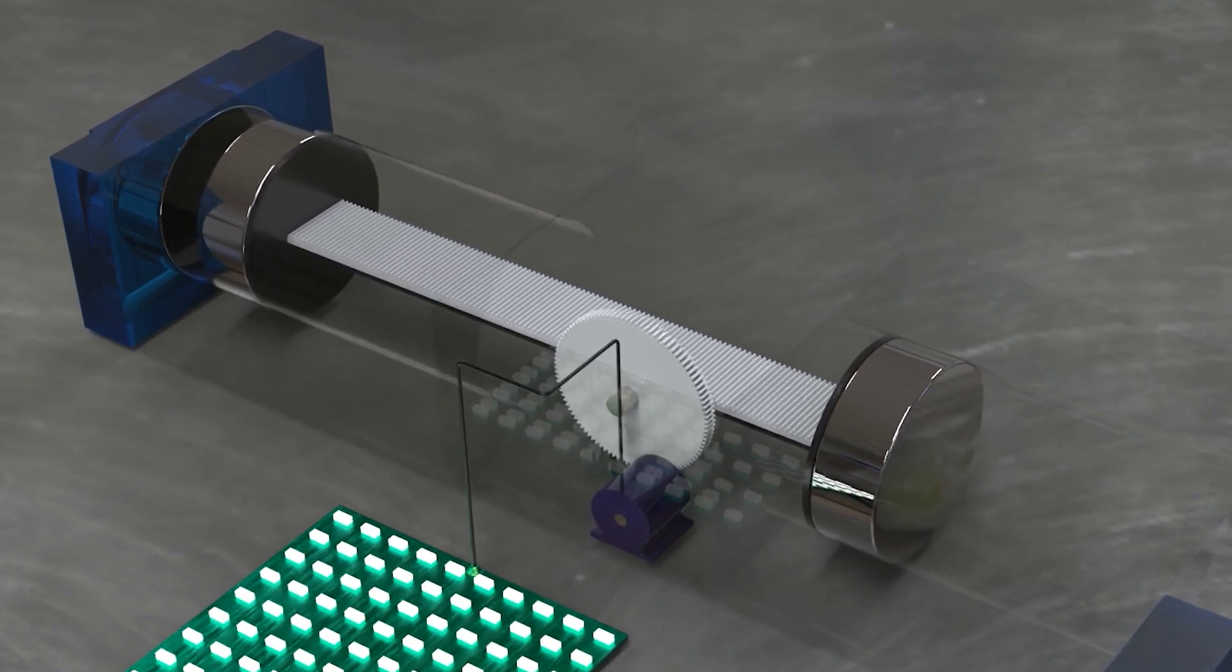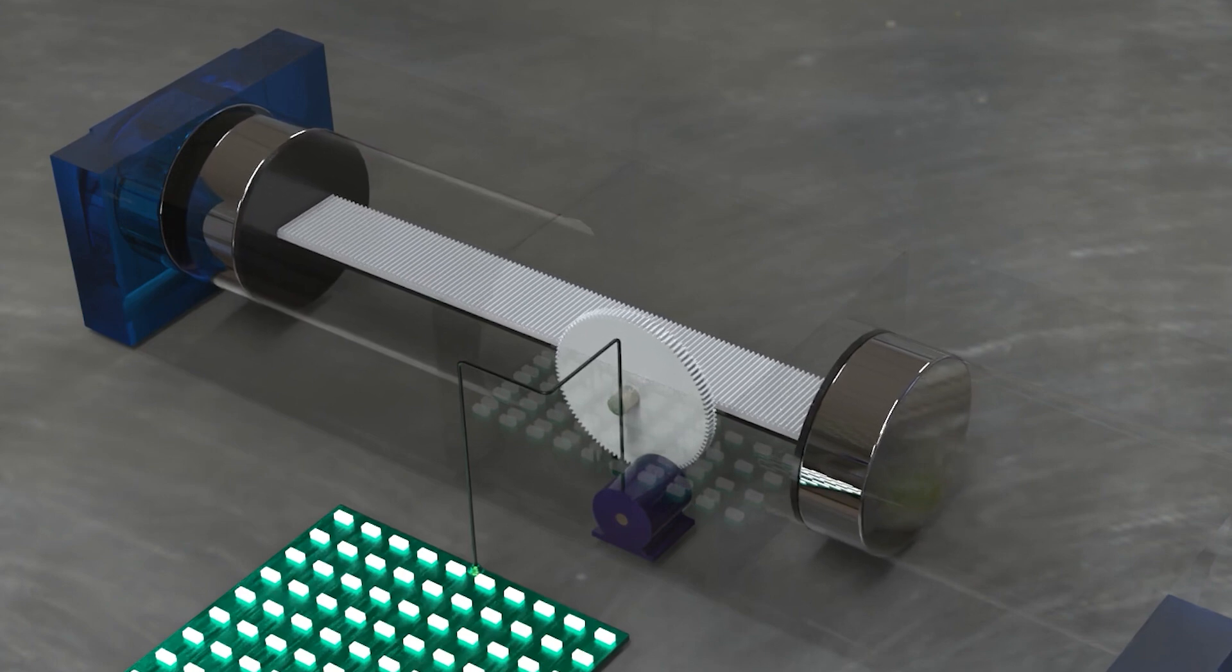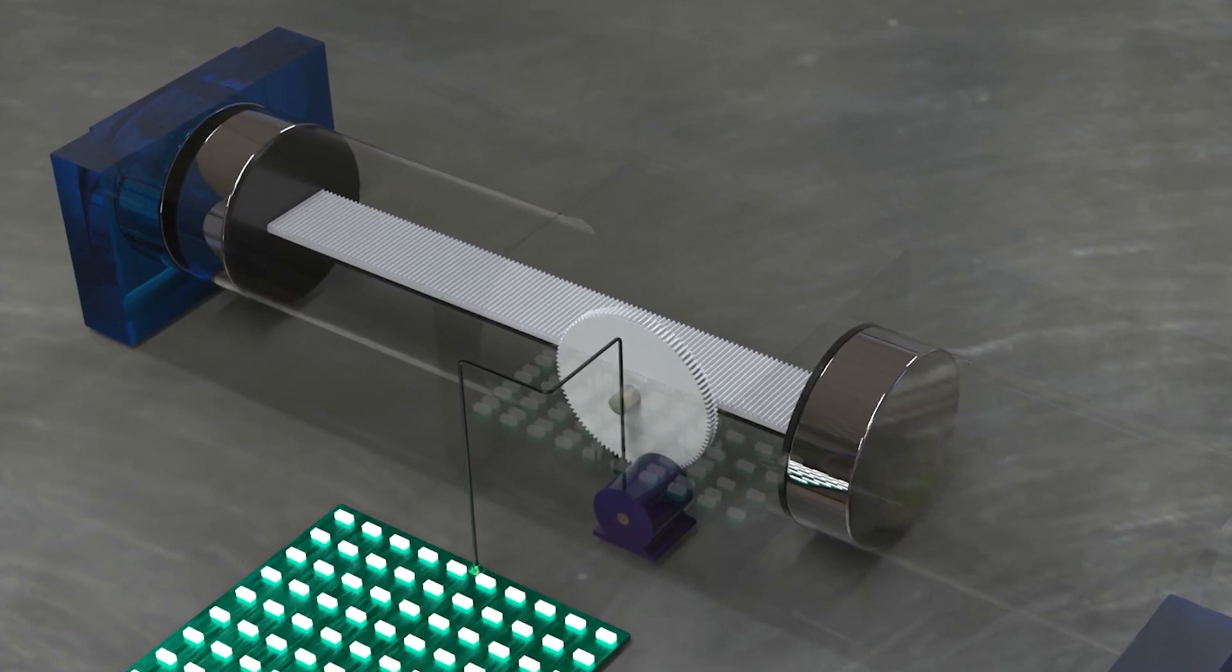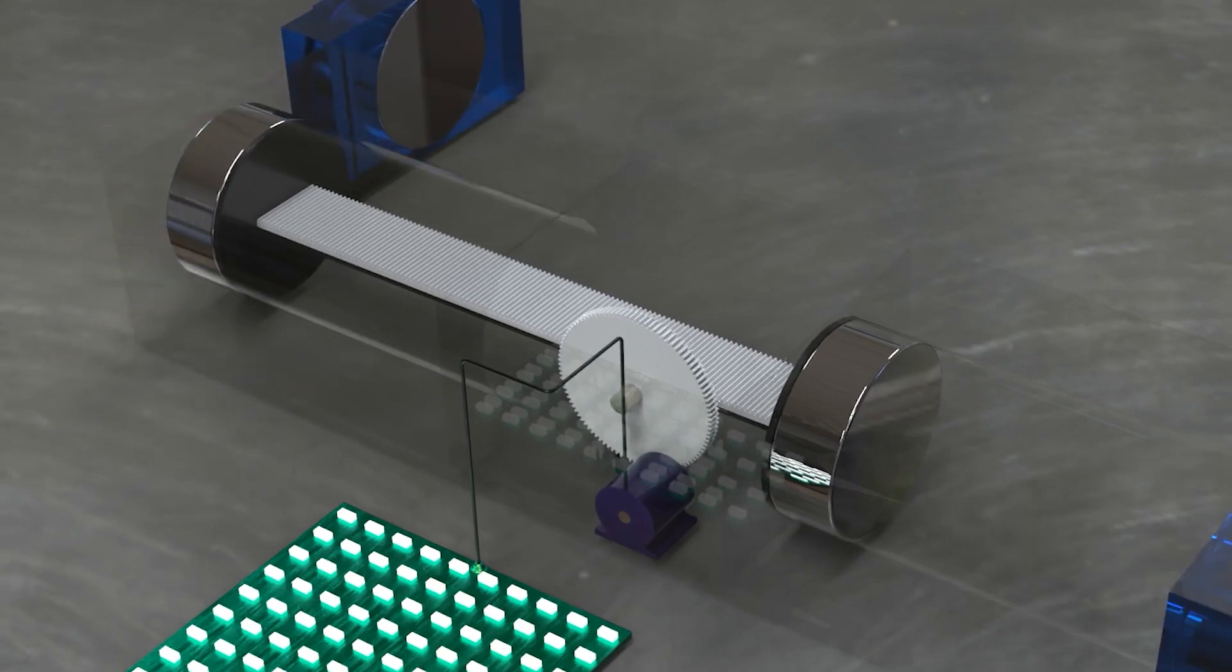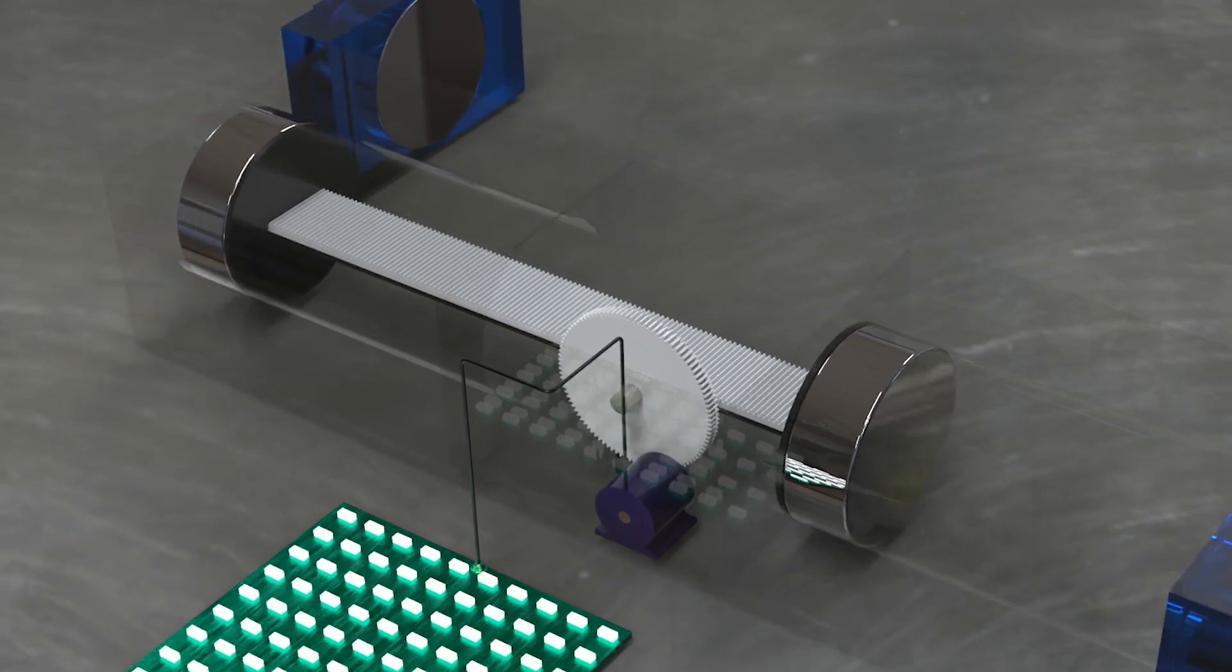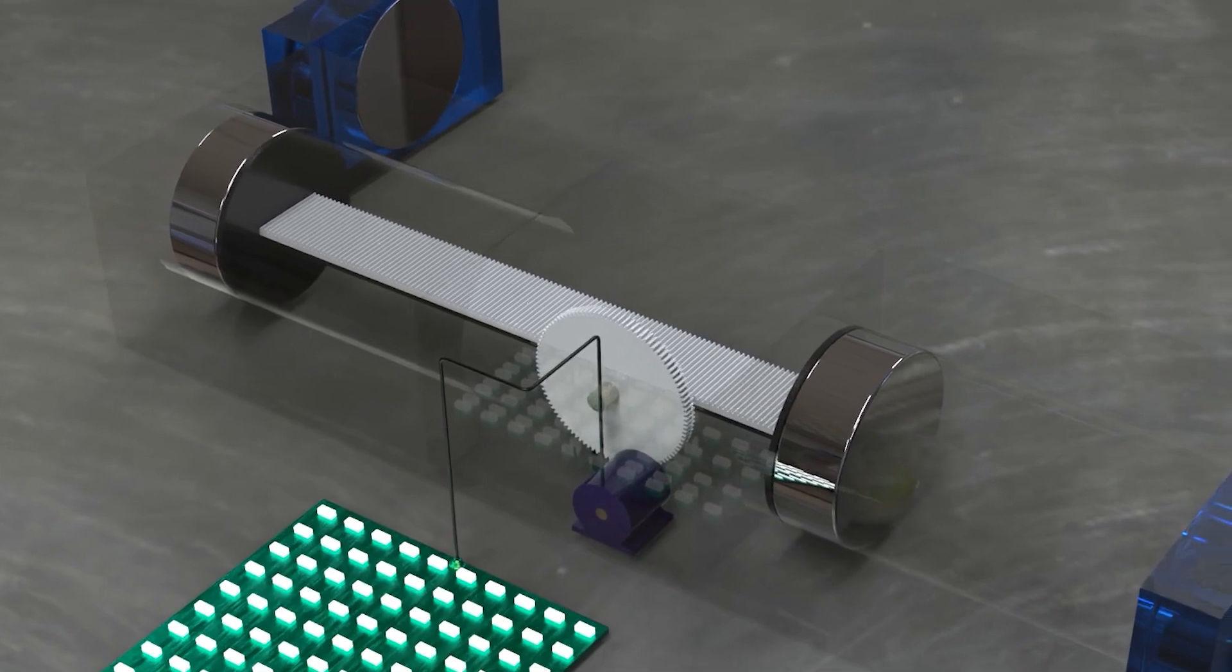When the fixed magnet is positioned at the end of the linear cylinder, an intriguing phenomenon takes place. The magnetic attraction power of the fixed magnet pulls the moving magnet towards it. As the moving magnet traverses toward the fixed magnet, the linear movement generated by the gear undergoes a fascinating transformation.